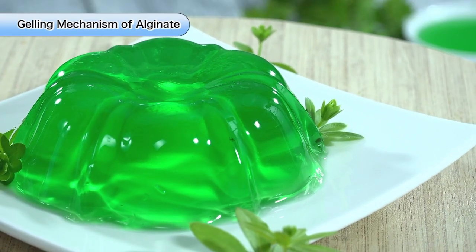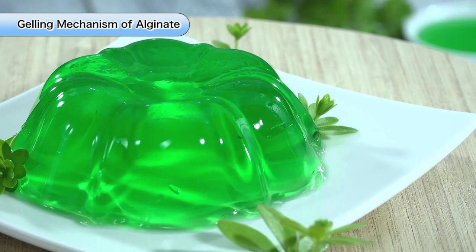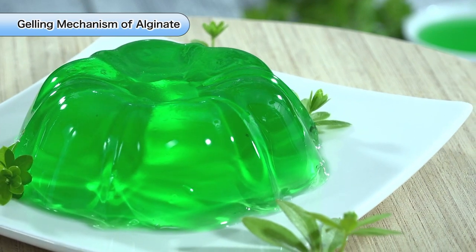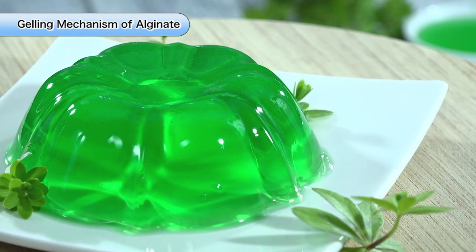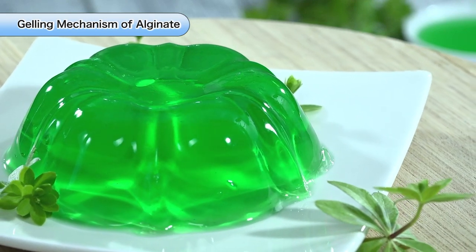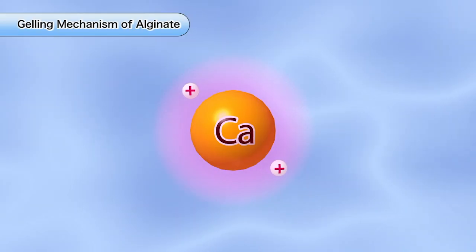By controlling the ionization of calcium, it is possible to gel the entire solution into any desired shape. This process is called the ion control method. Let's take a look at how this ion control method works.